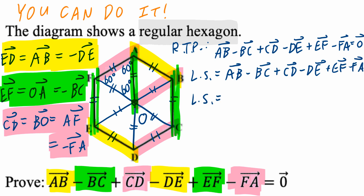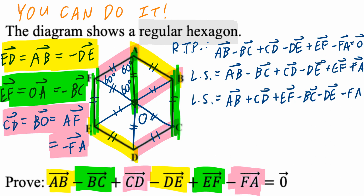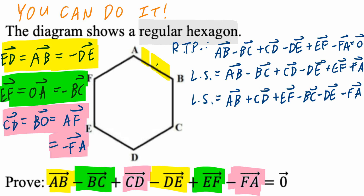Looking carefully, I'll split this into two groups. The first group contains the first, third, and fifth vectors: vector AB plus vector CD plus vector EF. The second group is minus vector BC minus vector DE minus vector FA. The key behind this example is thinking about zero vectors — one going from AB to BO to OA, and the second being the exact opposite.